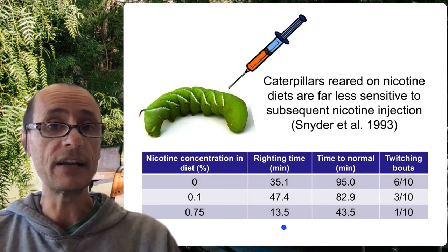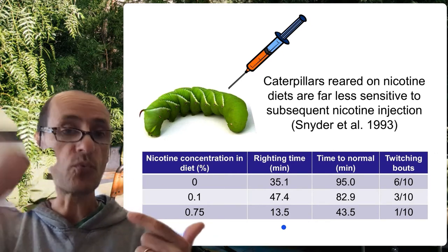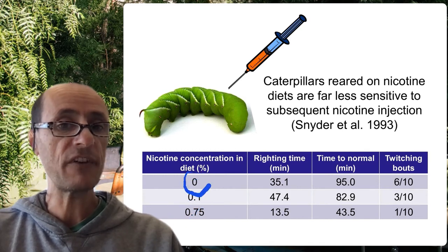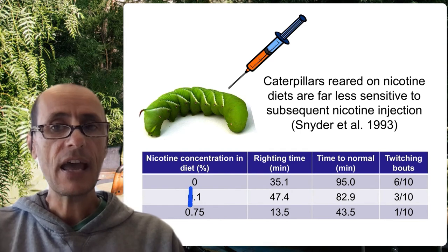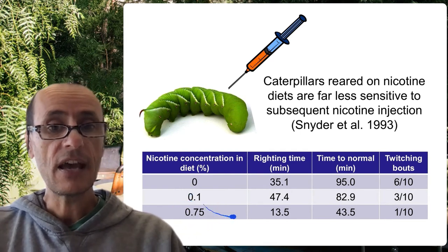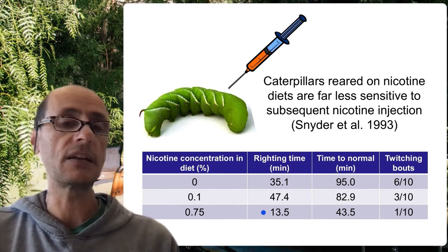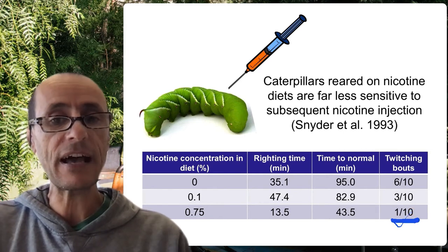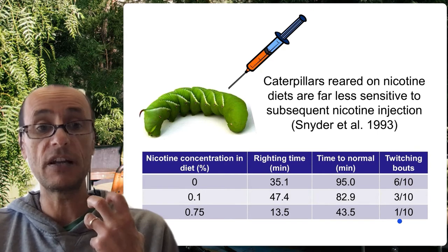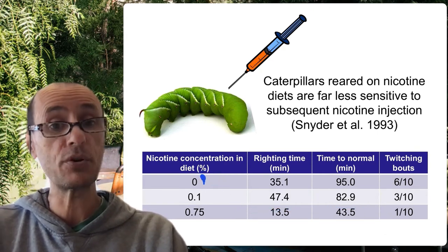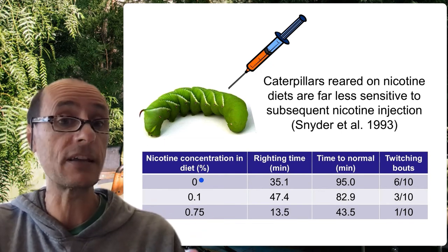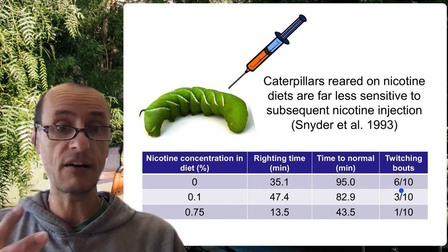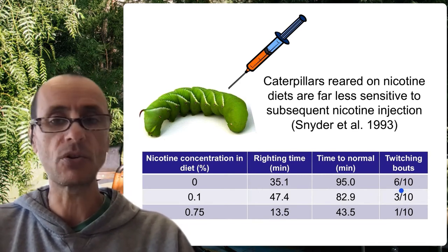Caterpillars reared on nicotine in the first place are less sensitive when they re-encounter nicotine subsequently. Caterpillars that have been fed on nicotine and then injected with nicotine subsequently are able to come back to their senses more rapidly and don't experience the classic physiological twitching that is characteristic of an impact on the neural system — compared to the ones not previously exposed to nicotine, which had not had the chance to upregulate those cytochrome P450s. Those take almost twice as long to get back to normal.